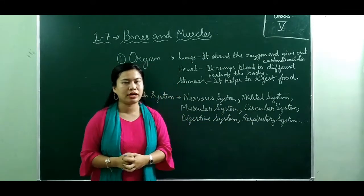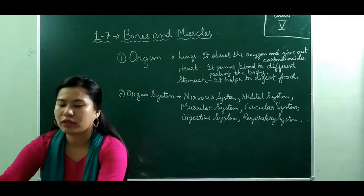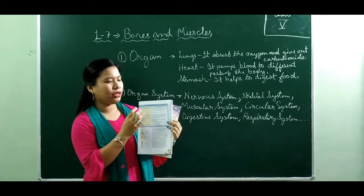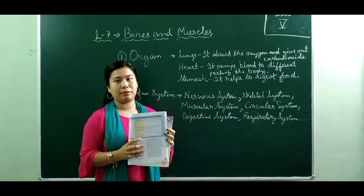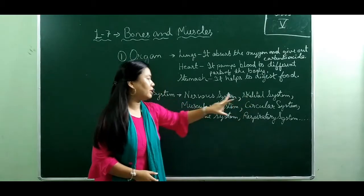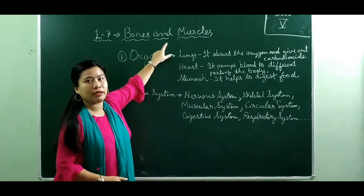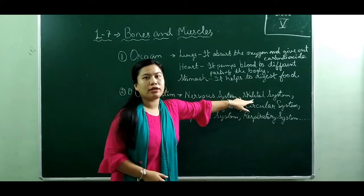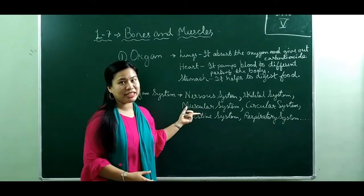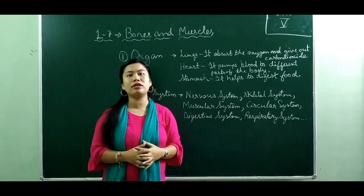Some organ systems are: the nervous system, skeletal system, muscular system, digestive system, respiratory system, and more. You can find a table of organ systems and their functions on page 53 of your book. Among all these systems, we are going to discuss the skeletal system and the muscular system, because our lesson is about bones and muscles.